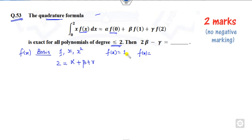Secondly, I can take f(x) as the second basis, x. It will be x², so x³/3, which is 8/3. f(0) is 0, f(1) is 1, and f(2) is 2. Thirdly, I can take f(x) as x². So this is x³. If you solve them it will be 4. This will be beta plus 4γ.